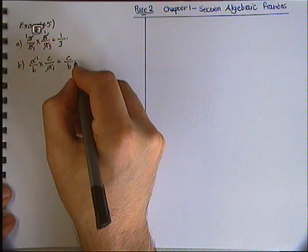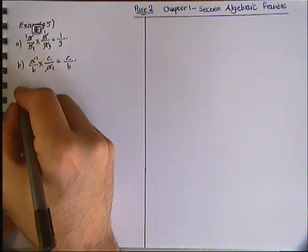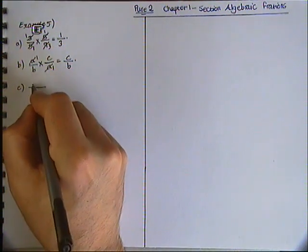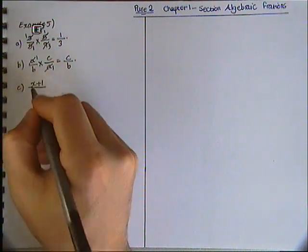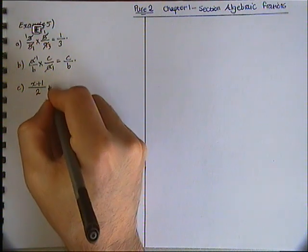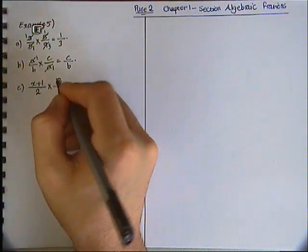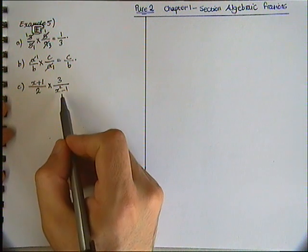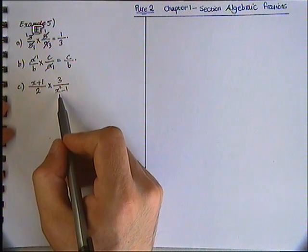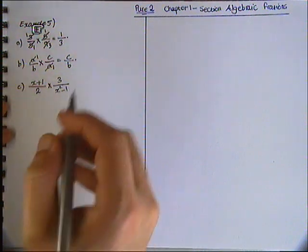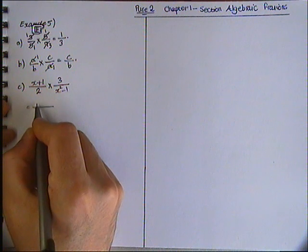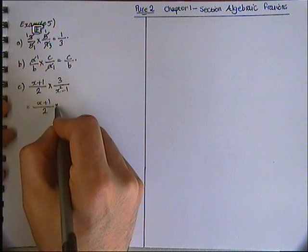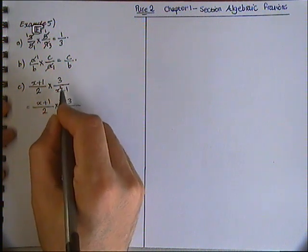Let's move on to a bit more complex problem. X plus 1 over 2 times by 3 over x squared minus 1. The second fraction, the denominator of the second fraction is a quadratic, so we need to simplify this first, or rather factorize. Let's write the first one as it is: x plus 1 over 2 times by 3 over x squared minus 1.